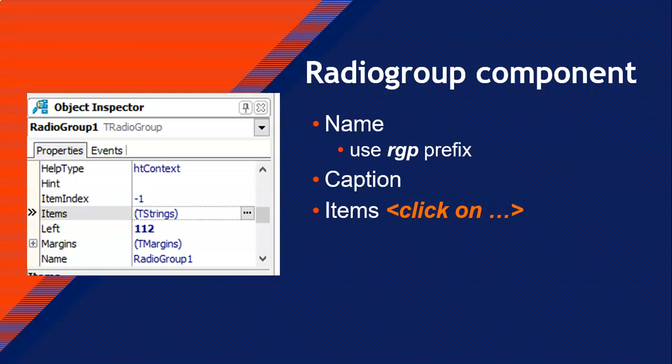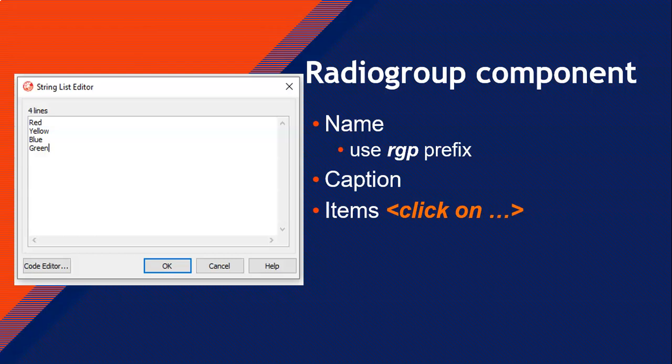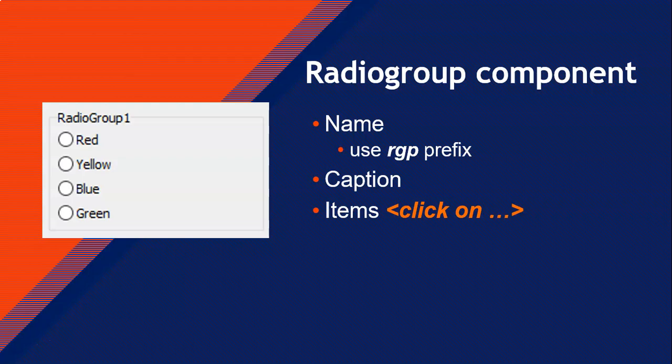To put in the options, go to the object inspector and you'll notice a property called Items — it says T strings with a little ellipse at the end. Click on that and a string list editor will appear where you can write down all the options you want. For example, you could add red, yellow, blue, green — four options. When you click OK, your radio group will show those four options.